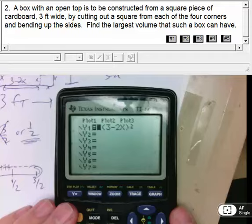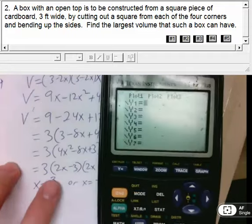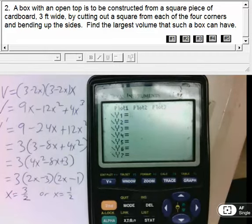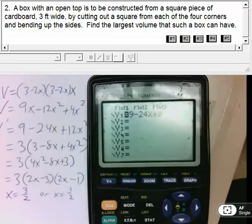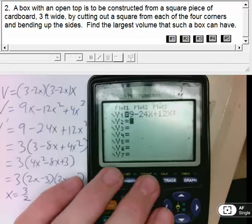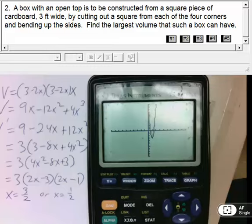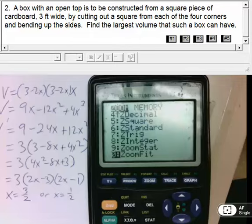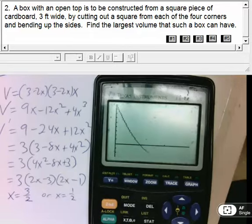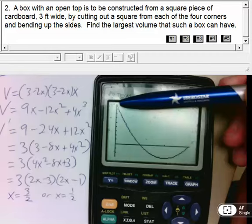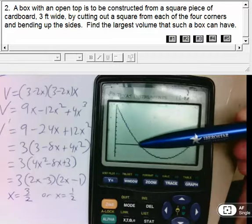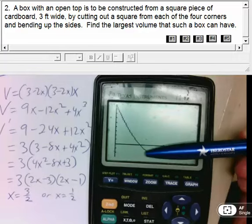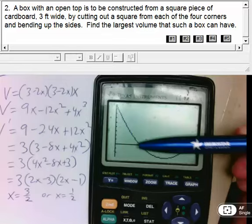And that's basically it. Again, I could have graphed the derivative instead. Just for the heck of it, I'll do that. So my derivative was 9 minus 24X plus 12X squared. Here's my derivative. Oops, I did a standard back, so I didn't mean to do that. 0 to 1.5, and then I'll do a zoom fit. So here's my derivative.